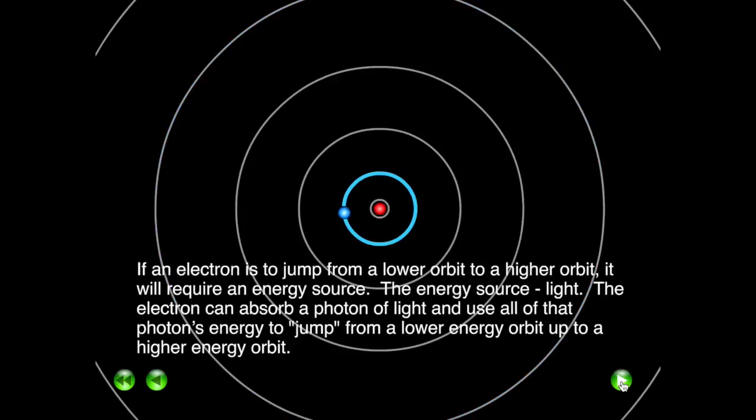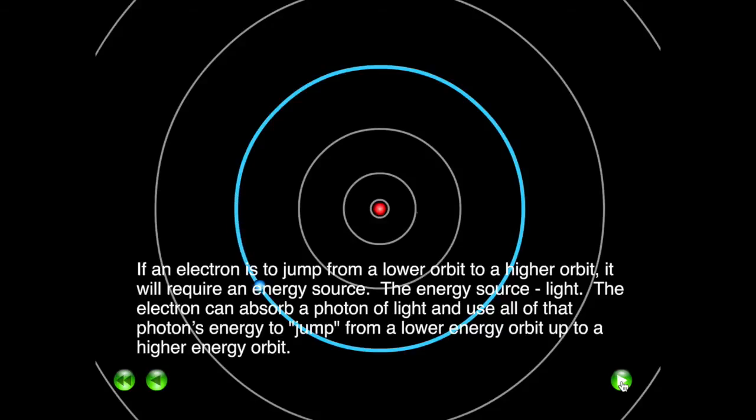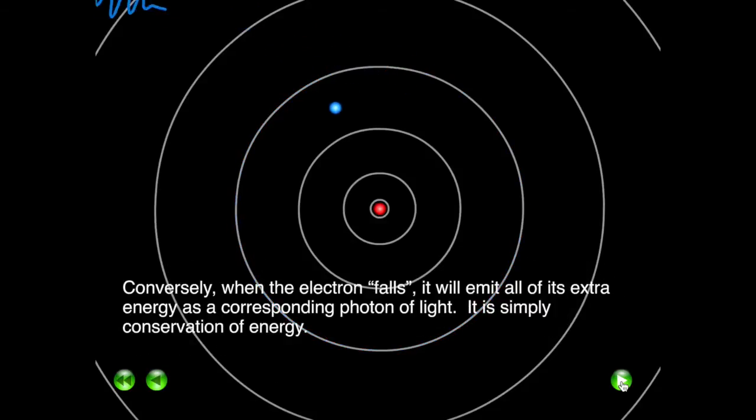If an energy is given to an electron, it will jump to a level where it corresponds to that energy. If the energy is emitted as light, the electron will fall down to the original orbit.